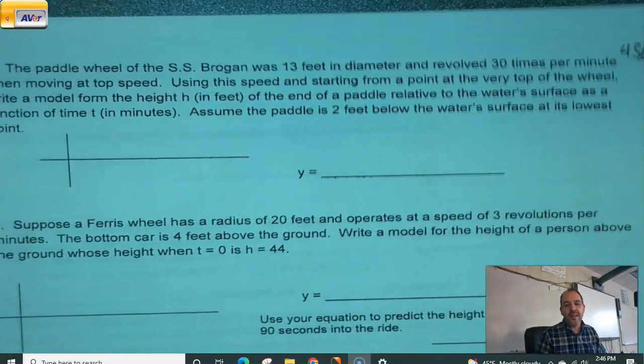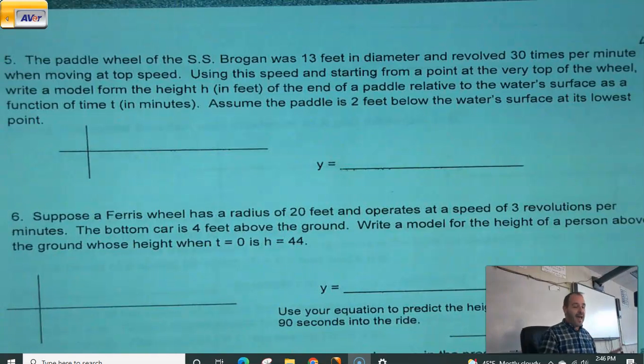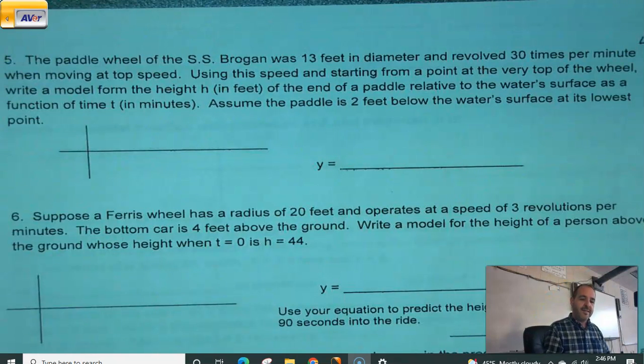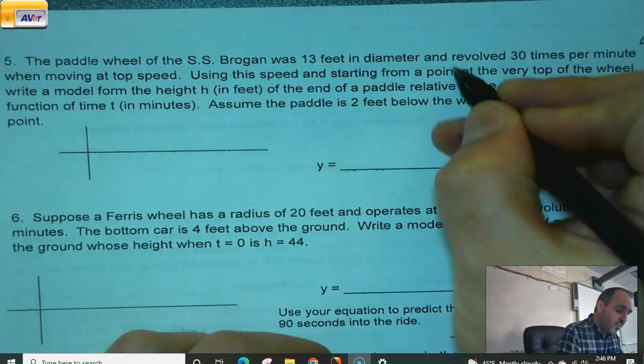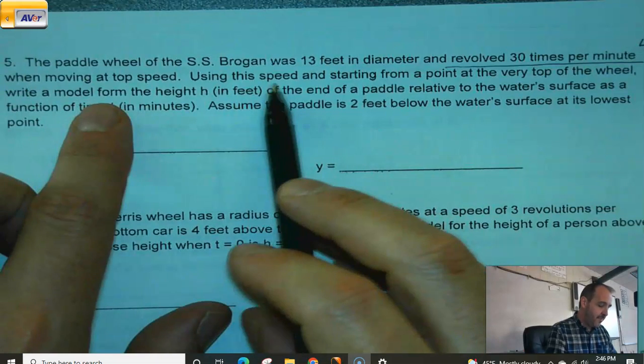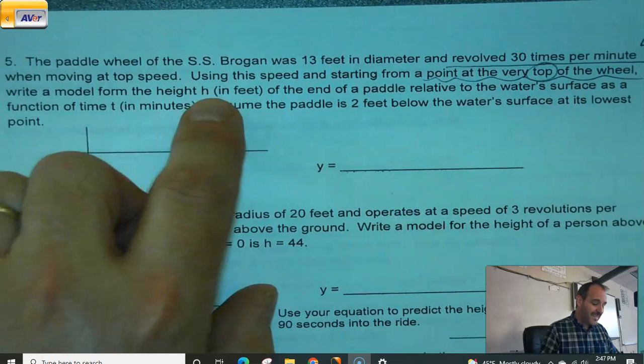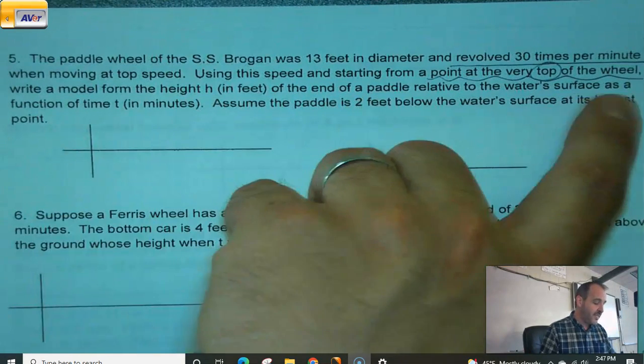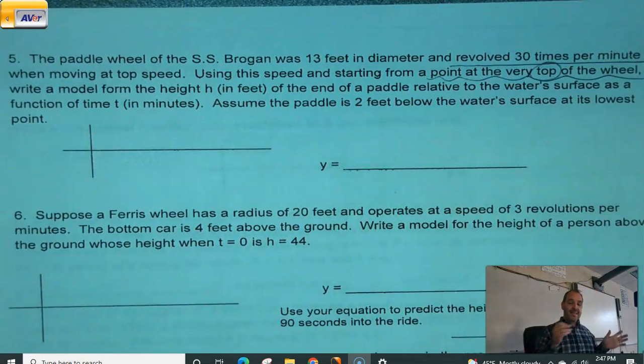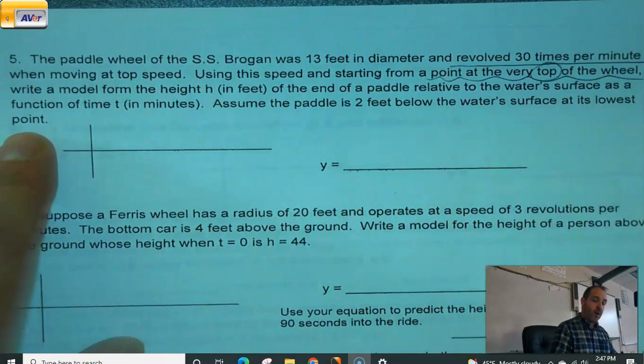All right. Just a couple more because we're really just doing this to intro you to this. There's going to be one question about this on the test. I will tell you that in advance. But you're going to see a lot of these form the same way. So let's keep rolling here. I need to stop talking so much and keep doing things here. Paddle wheel of the SS Brogan was 13 feet in diameter and revolved 30 times per minute when moving at top speed. Okay. So this wheel is doing revolutions at 30 per minute. Good to know.